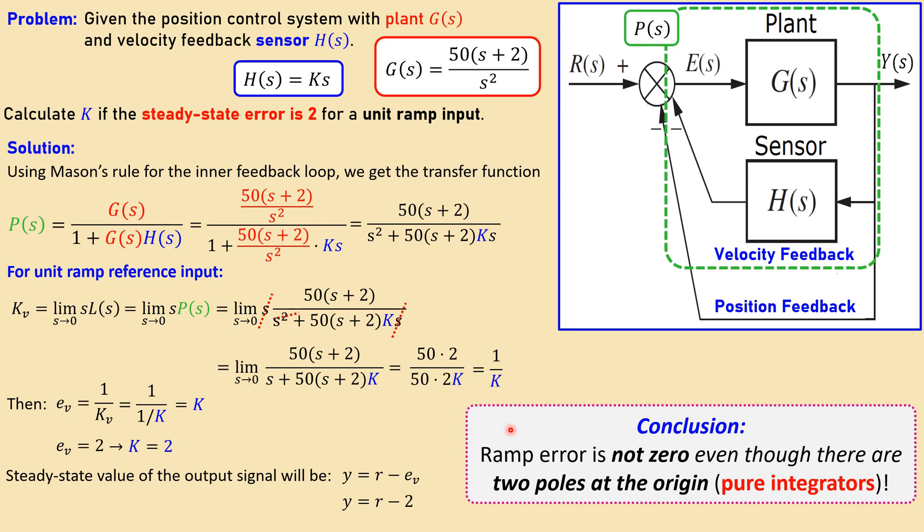and actually also some detailed explanation about the errors that we have a type 2 system when we have 2 pure integrators at the origin. This is the case, but still we don't have a ramp error at 0.